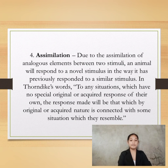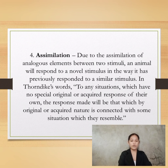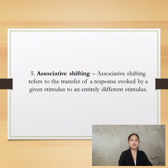The fourth characteristic is assimilation. Due to the assimilation of analogies between two stimuli, an animal will respond to a novel stimulus in the way it has previously responded to a similar stimulus. In Thorndike's words, to any situations which have no special original or acquired response of their own, the response made will be that which by original or acquired nature is connected with some situation which they resemble. The fifth is associative shifting, which refers to the transfer of a response evoked by a given stimulus to an entirely different stimulus.